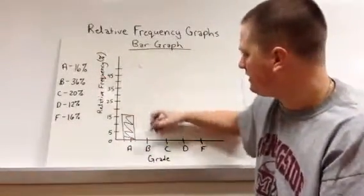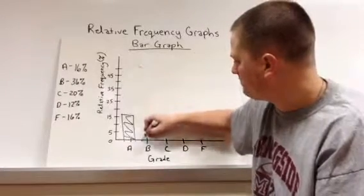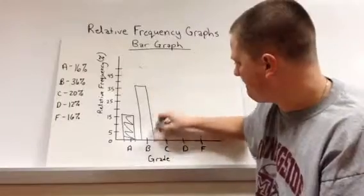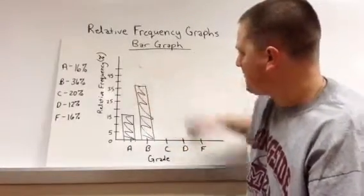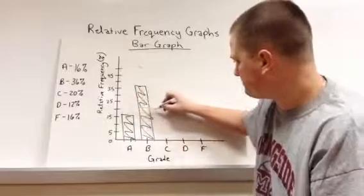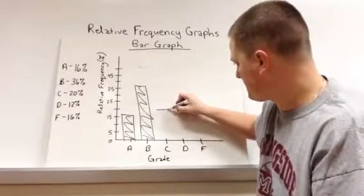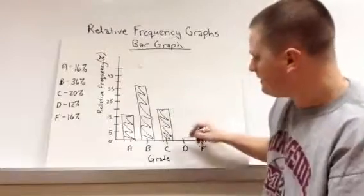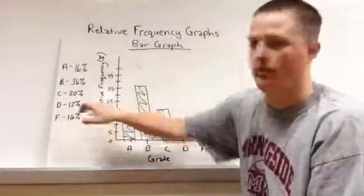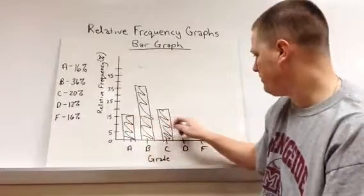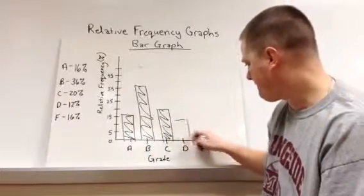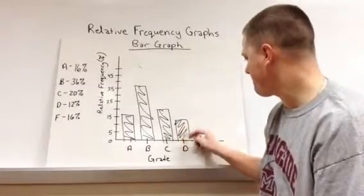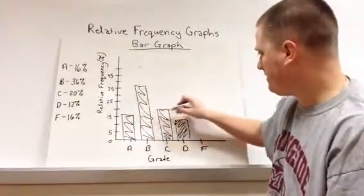B, we had 36, so just above 35. C, we've got 20. D, we had 12%, just above the 10. And F was back up to 16.